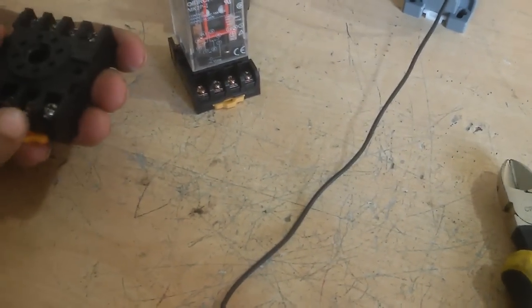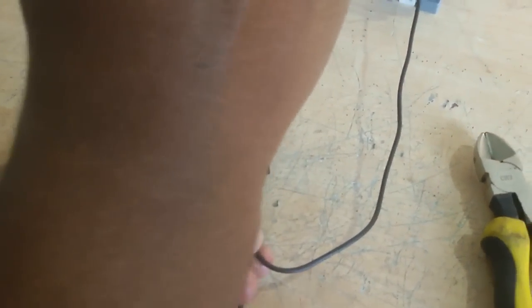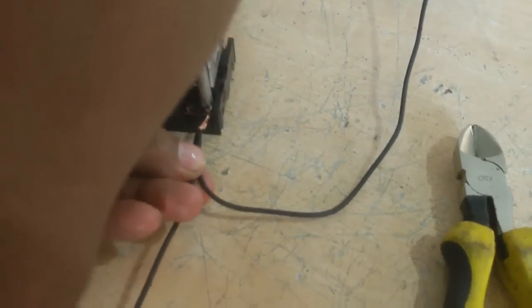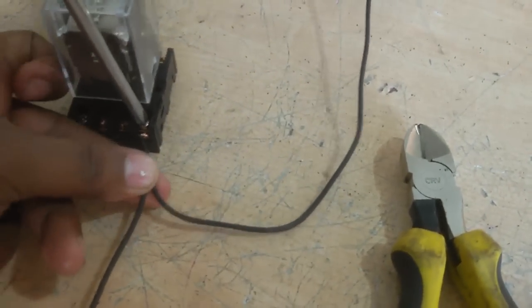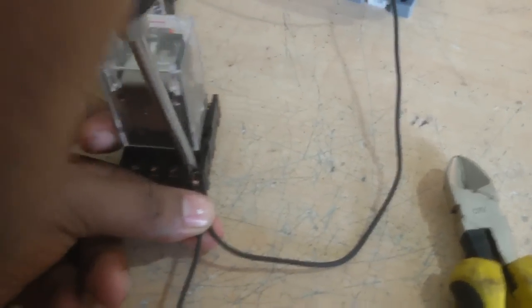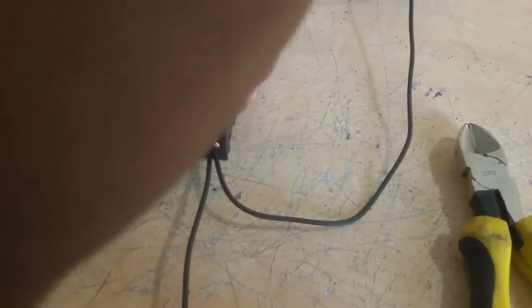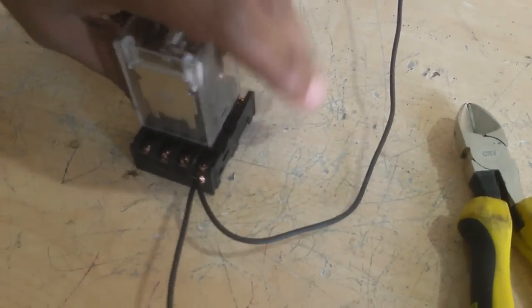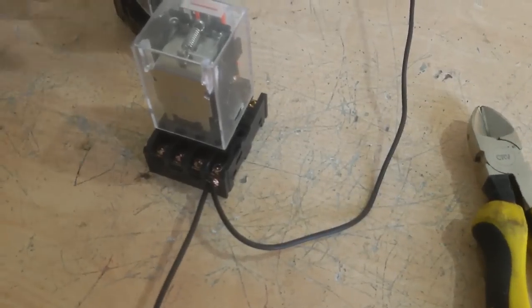I short here the relay coil. This is relay coil. This type relay has 2 and 7 terminal relay coil. You see this relay diagram.